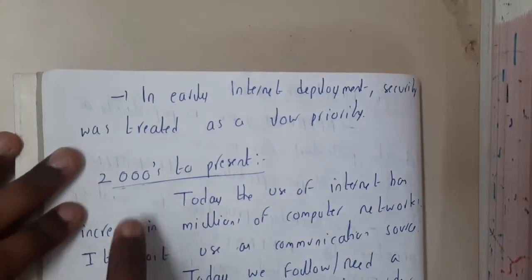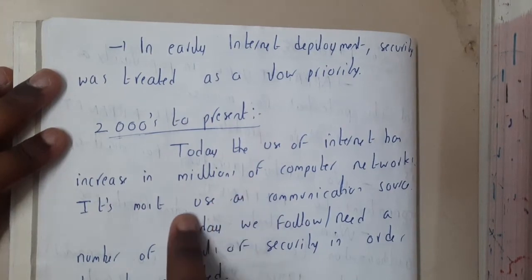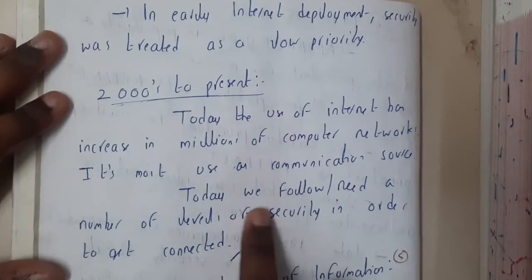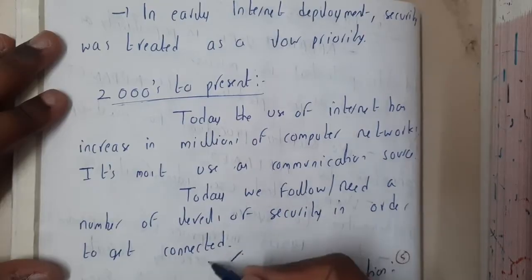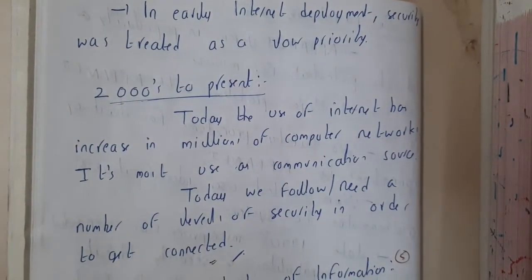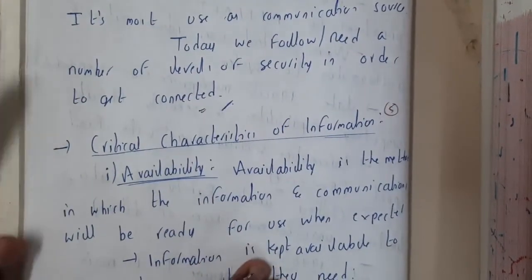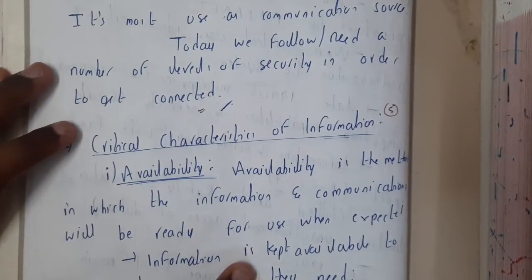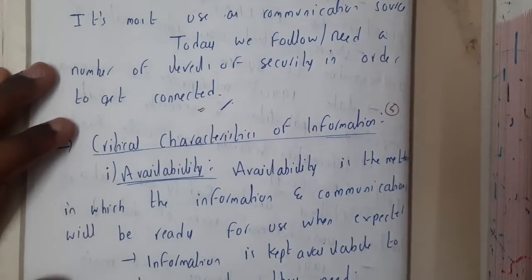From 2000 to the present, the use of the internet has grown to millions of computers connected in the network, making it the most used communication source. Today we follow and need a number of levels of security. Even for some logins on websites, OTPs are sent — there are multiple security layers. In the next lecture we will discuss the concepts and characteristics of information security.